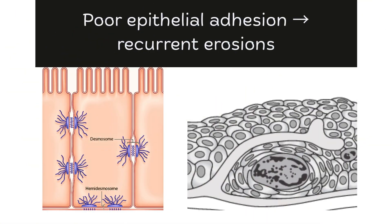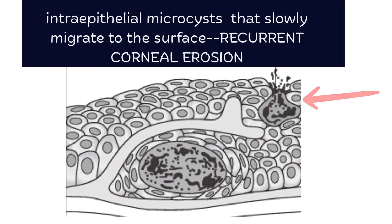Let's talk about why patients with EBMD develop their symptoms. Because the basement membrane is abnormal, the epithelial cells can't form proper adhesions — both between themselves and with the underlying layers. In other words, the desmosomes and hemidesmosomes are defective. When these weakly attached cells and cysts migrate to the surface, they don't anchor securely, resulting in erosions — often recurrent corneal erosions.